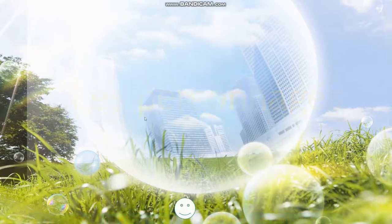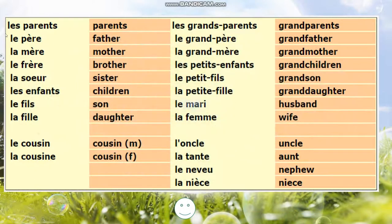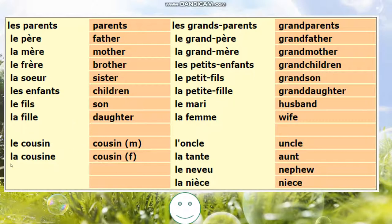Les personnages — family members vocabulary. Les parents: le père (father), la mère (mother), le frère (brother), la sœur (sister). Les enfants: le fils (son), la fille (daughter). Le cousin, la cousine. Les grands-parents: le grand-père, la grand-mère. Les petits-enfants: le petit-fils, la petite-fille. Le mari (husband), la femme (wife), l'oncle, la tante, le neveu, la nièce.